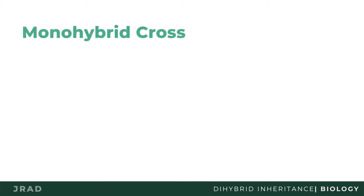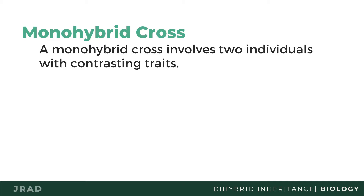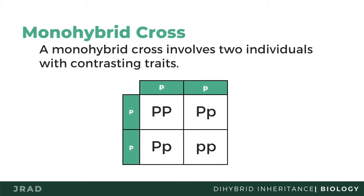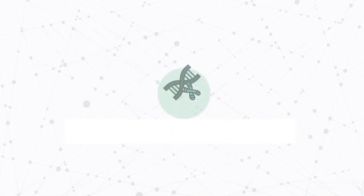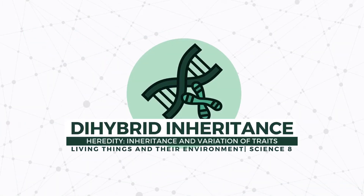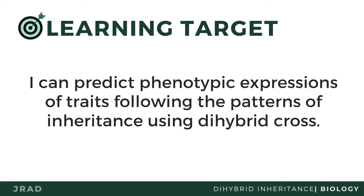In the previous lesson, we described monohybrid inheritance as the inheritance involving a single trait one at a time. In this video, we will discuss dihybrid inheritance. Specifically, we will try to predict phenotypic expressions of traits following the patterns of inheritance using dihybrid cross.